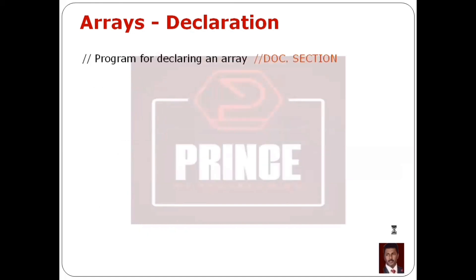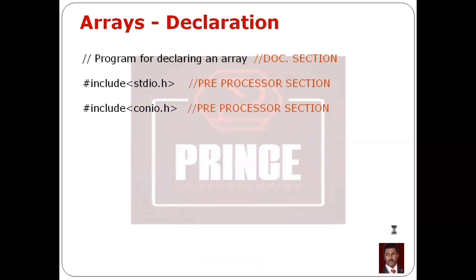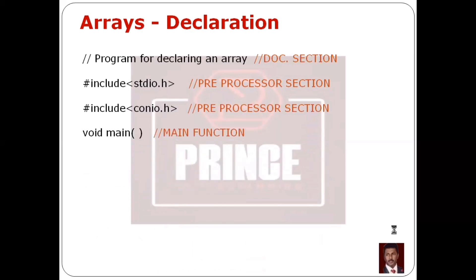The program for declaring an array: we declare an array in a C program. First, we include header files in the preprocessor section, such as the stdio.h header file. Then the main function — the return type is void, which is an empty data type.